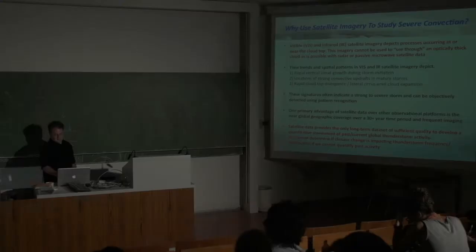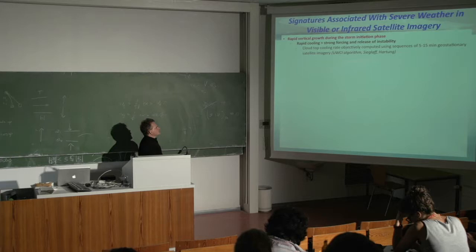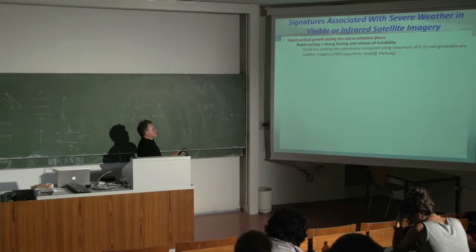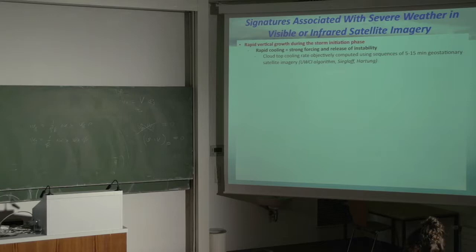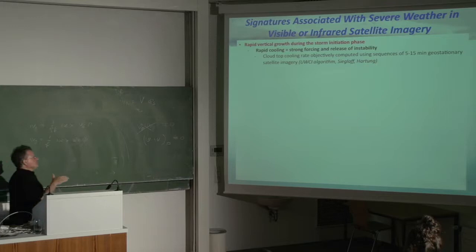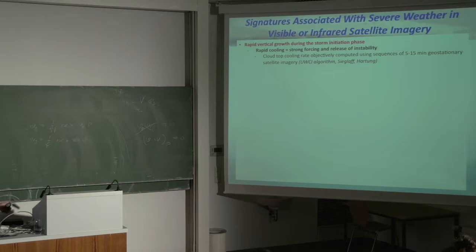One algorithm developed at the University of Wisconsin is the cloud top cooling rate, which objectively computes cooling using a sequence of 5-to-15-minute geostationary satellite imagery, using the 10.7 or 10.8 micron channel. This product is similar to the convective initiation algorithm in using the 10.8 cooling rate but does not use atmospheric motion vectors to track the clouds. It has shown value in detecting which storms are going to be severe, with about three published papers on the topic.